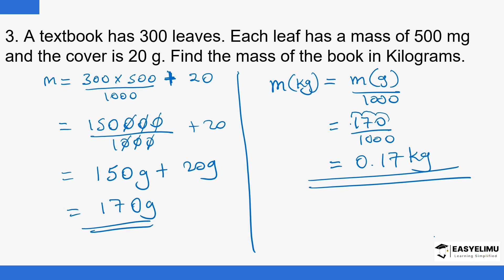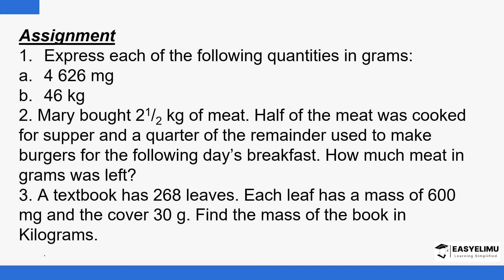You multiply the mass of each leaf times the number of leaves, then you add the mass of the cover. You will find that mass in milligrams. Divide it by 1,000 to change it to grams, add the mass in grams, and then you have total mass in grams. Finally you convert it to kilograms.